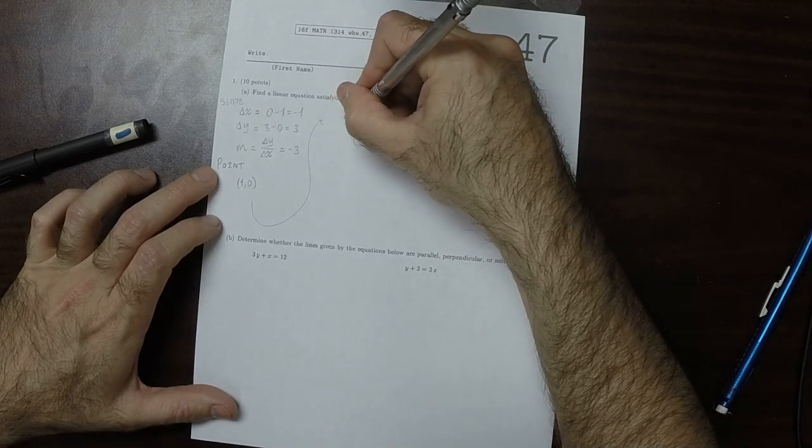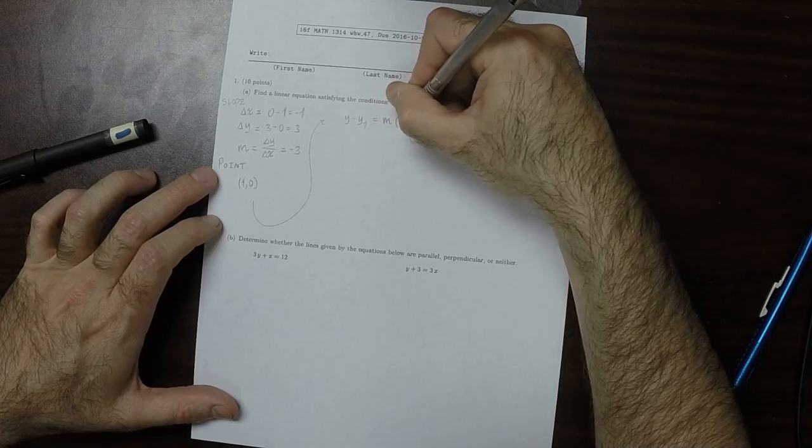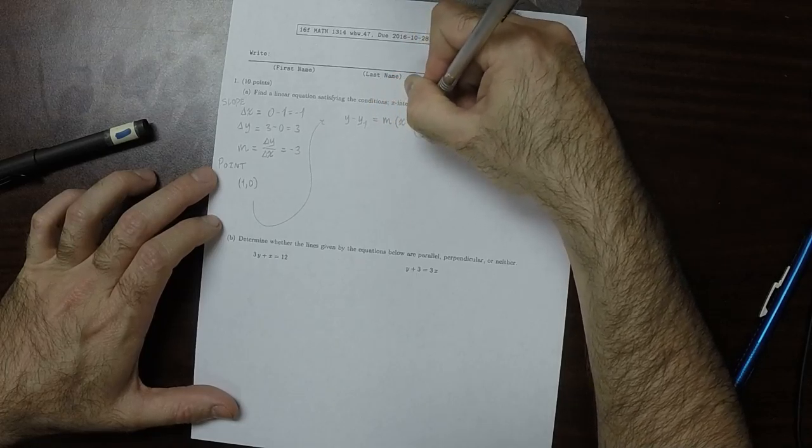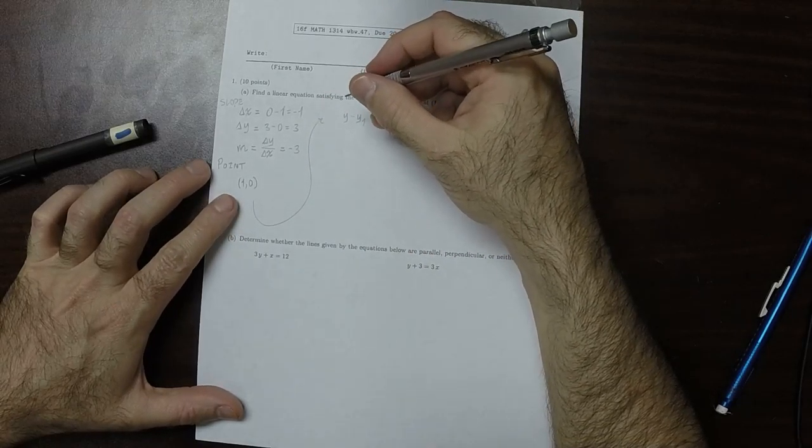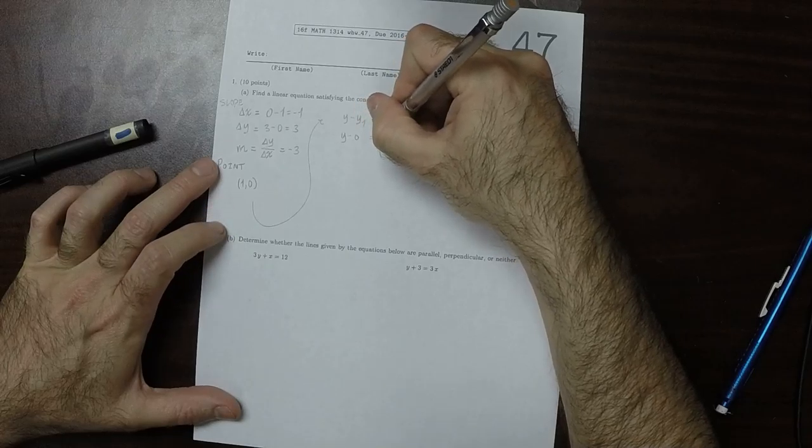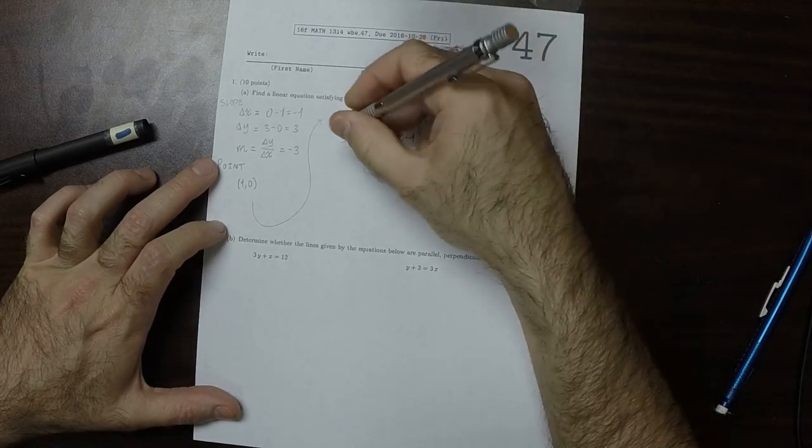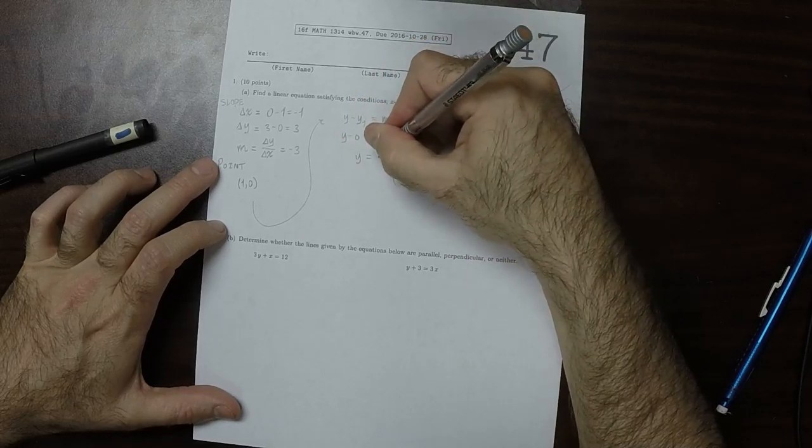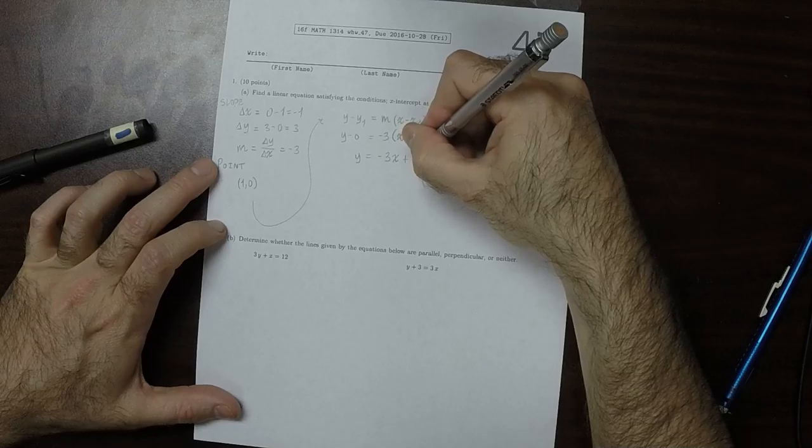So y minus y1 equals m times x minus x1. Now it's just a matter of plugging all this stuff in. So y minus 0 is negative 3x minus 1. So y is negative 3x plus 3.